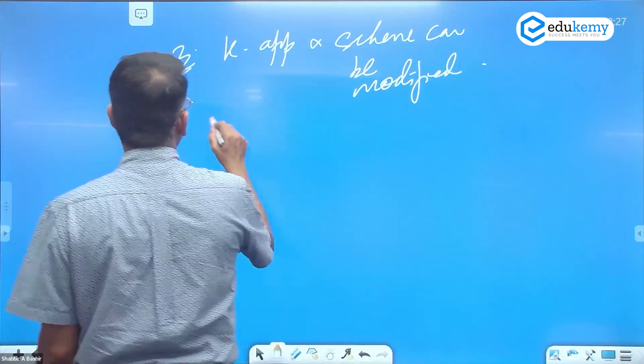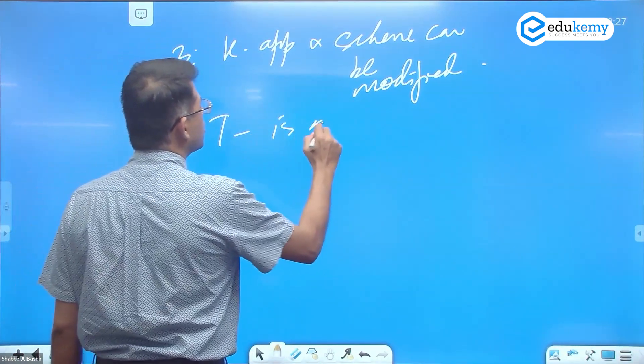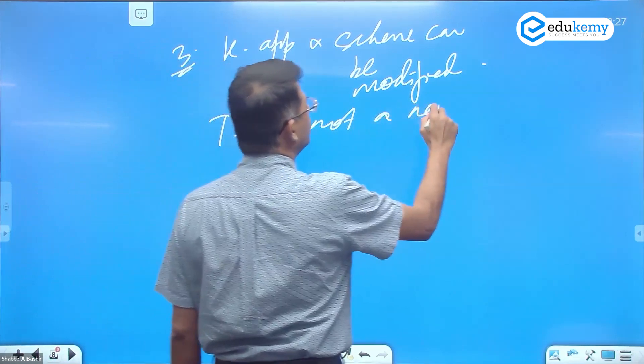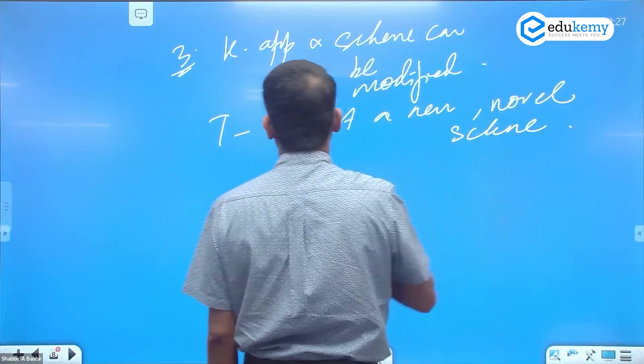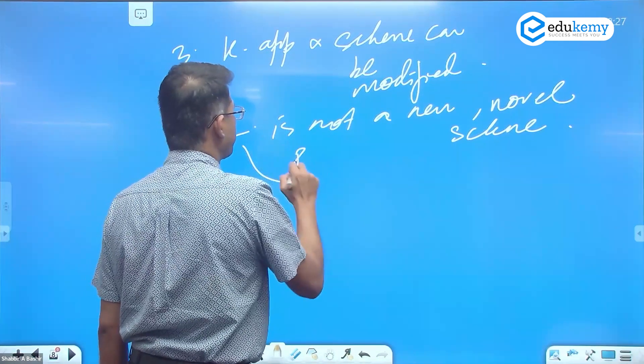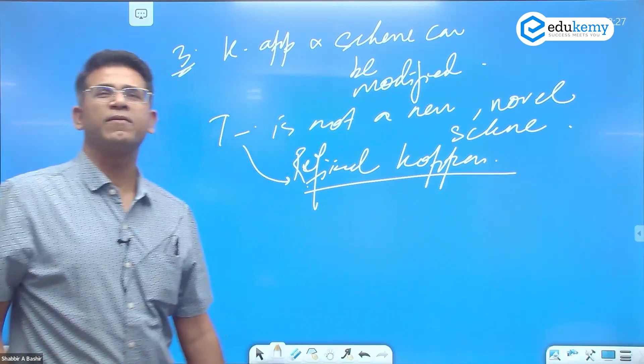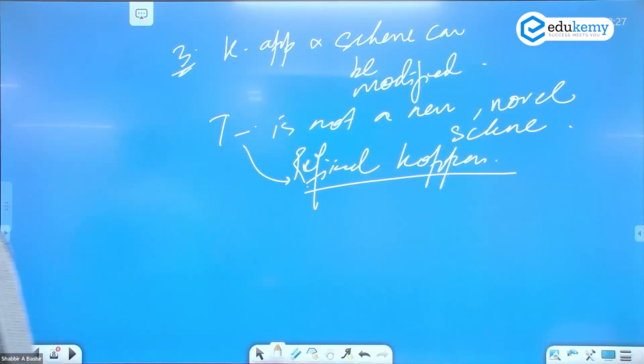So Thriwartha, remember, is not a new or a novel scheme. This is essentially refined Köppen's application. It is refined Köppen's climatic classification.